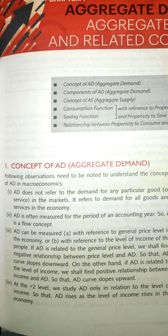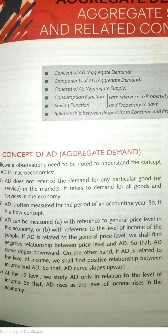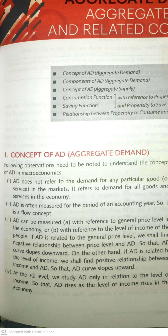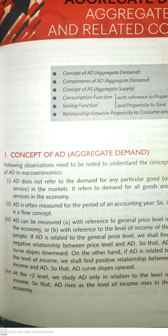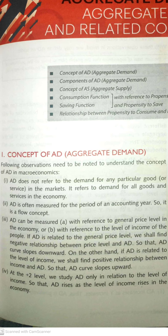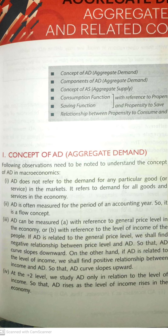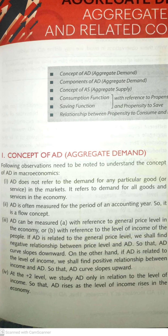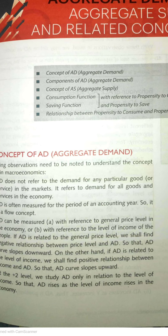If we look at the concept, there are observations on which we can understand the basis of aggregate demand. The first observation is that AD does not refer to the demand for any particular goods or services in the market. It refers to the demand of all goods and services in the economy. Since we are talking about aggregate, we are talking about the whole economy.